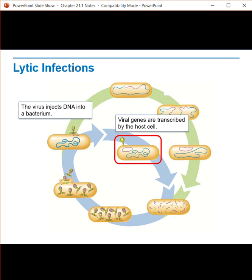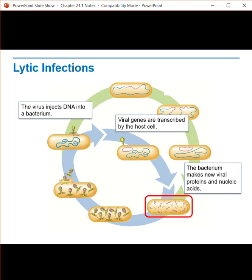Step two: the viral genes are transcribed by the host. The viral mRNA is translated into viral proteins that act as a molecular wrecking crew, chopping up the cell's DNA. Step three: the bacterium makes new viral proteins and nucleic acids. Under the control of viral genes, the whole cell now makes thousands of copies of viral nucleic acid and capsid proteins, enabling the virus to reproduce.